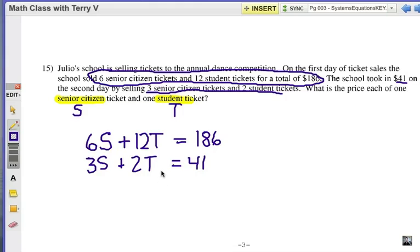Now we could use substitution, but I don't have a 1T or a 1S in either equation. So it would be a little more complicated to do it that way. Let's go ahead with elimination, which means I'm looking at multiplying that second equation by a negative 2. Now, think about it for a second. Why would I do that? That's right, because that would give me a negative 6S here and those would cancel.